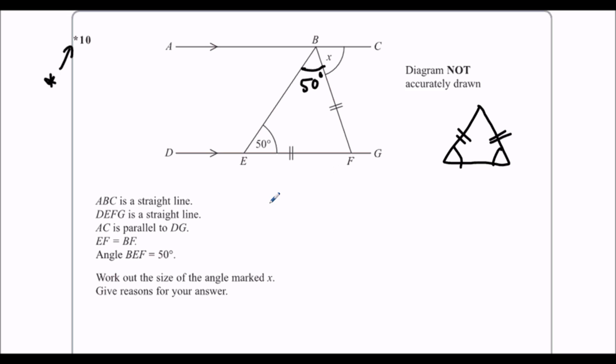So we have to write down the reason. So we go EBF. So EBF is 50 degrees because angles at the base of an isosceles triangle are equal.